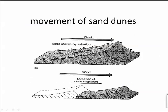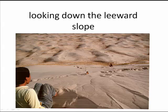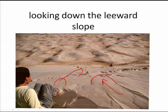Sand dunes constantly move, with sand being taken away from the windward side and falling down the leeward side — as a result, they tend to migrate downwind. If you sit on top of a sand dune and push your feet, you can create an avalanche that moves down like a liquid. This picture was taken at Kelso Dunes, one of the very few singing dunes. If a lot of sand avalanches at the same time, it starts to resonate, making a very eerie humming sound.